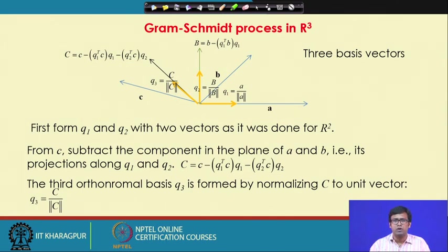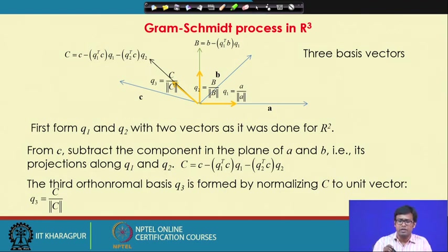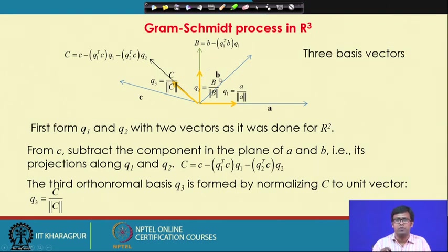The next vector Q2 must be orthogonal to Q1, contain some component of B, and have unit length. We project B onto Q1: since Q1 is a unit vector, the dot product B·Q1 gives the length of the projection of B on Q1. We subtract that component Q1·(Q1ᵀB) from B, yielding a vector capital B which is orthogonal to Q1. Then we divide it by its length to get the unit vector Q2.